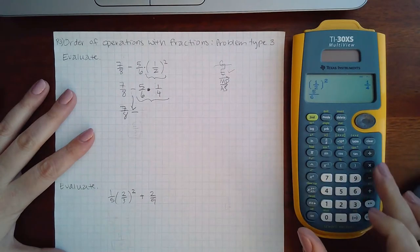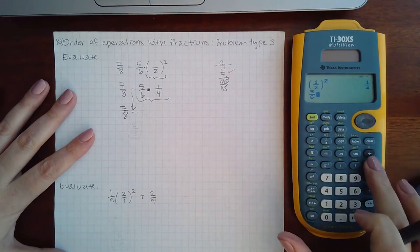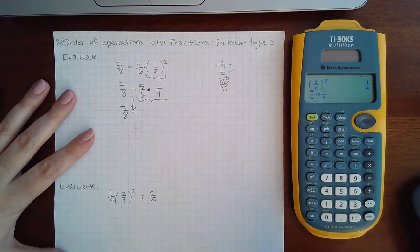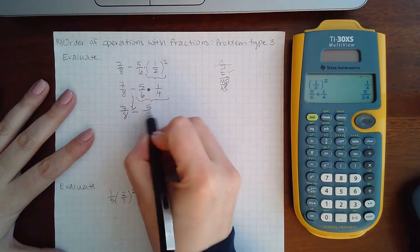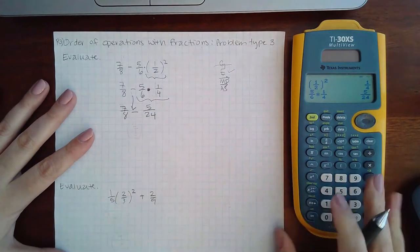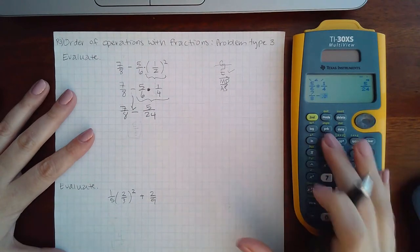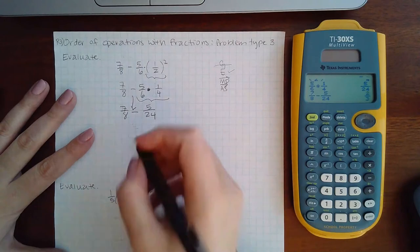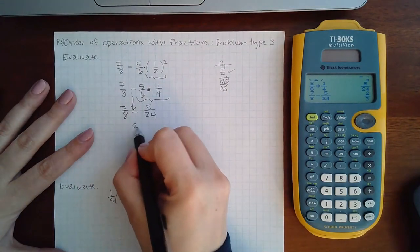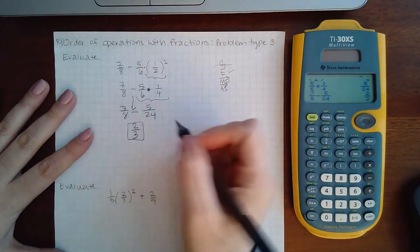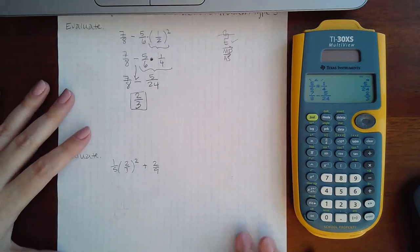Parentheses times one over four is five over 24. Then I can do seven over eight minus five over 24 and it reduces everything for me and I get the answer two thirds.